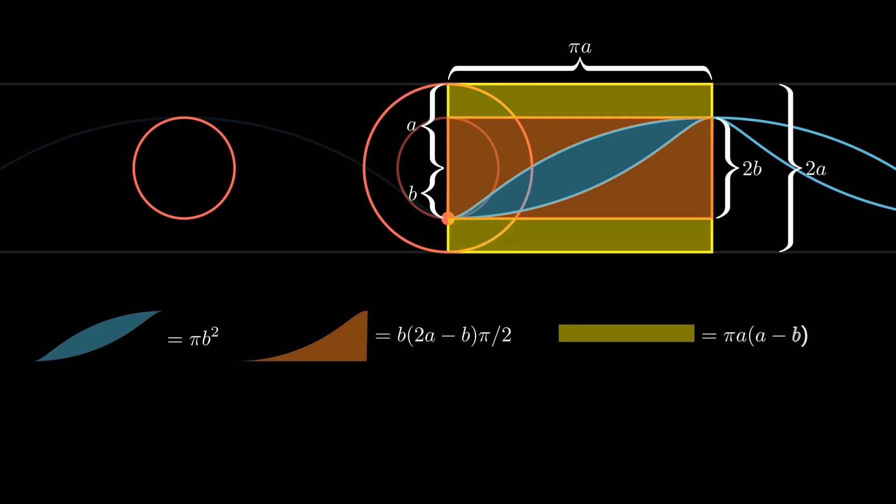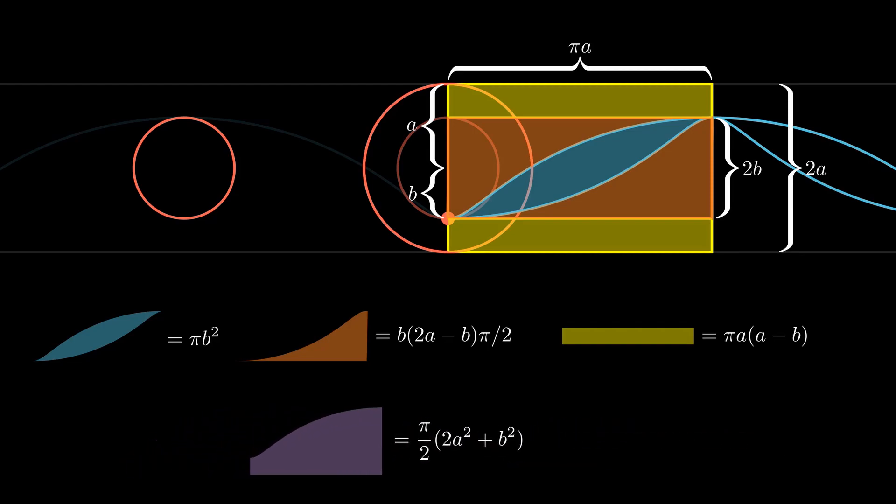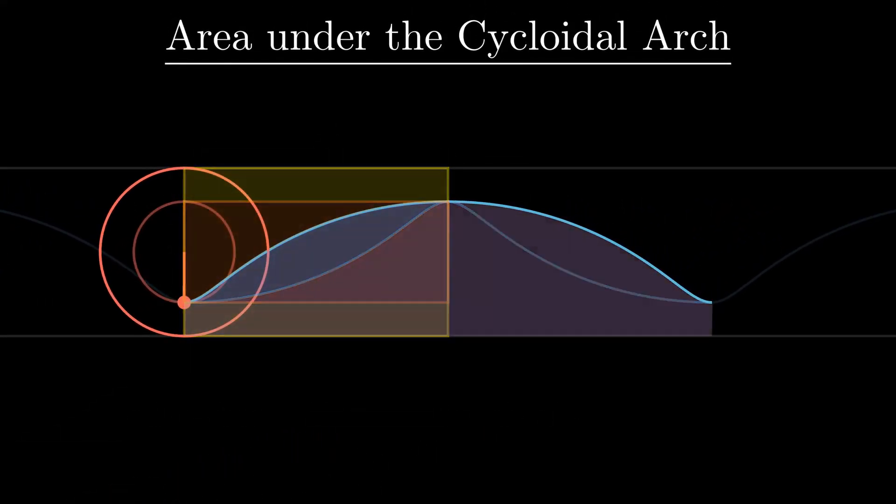Finally, the area of the smaller yellow rectangle is easy. Now that we have everything, we can find the area included in one half of the cycloidal arch to be b(2a - b)/2. And hence, the area under the full arch is π(2a² + b²).